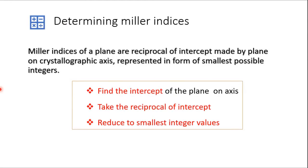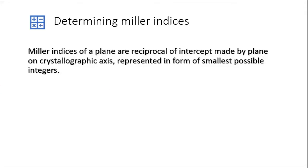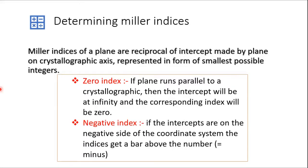Ab Miller Indices nikalne ka tariqa kya hai? Miller Indices nikalne ke liye hum sab se pehle plane ka axis per kya intercept hai wo nikalenge, aur uska reciprocal nikaalenge. Intercept ka aur us values ko hum common factor se reduce karenge. Agar aapke paas koi plane kisi axis ke parallel chal raha hai, toh us plane aapka us axis ko kabhi bhi intersect nahi karega — it means us plane ka intercept jo hai infinity pe hoga, aur aise case mein jo corresponding Miller Index hoga woh zero hoga.